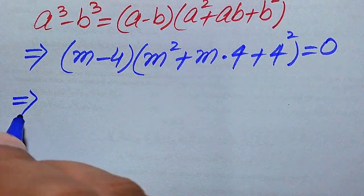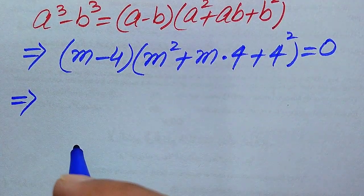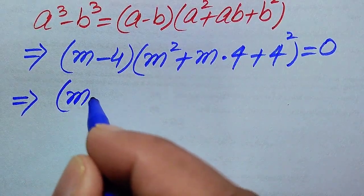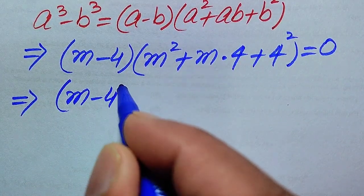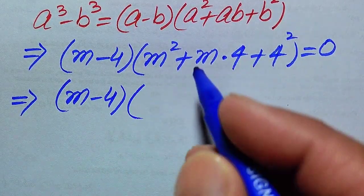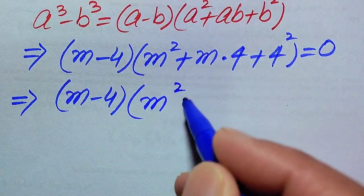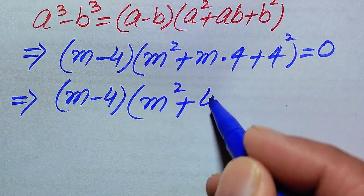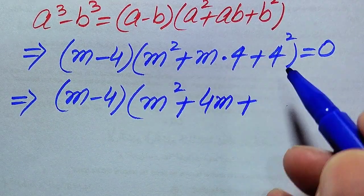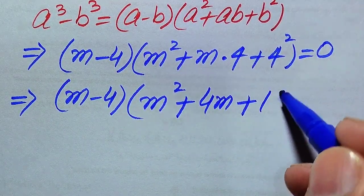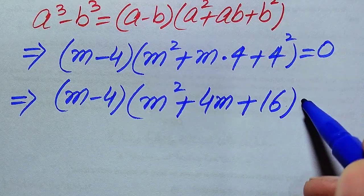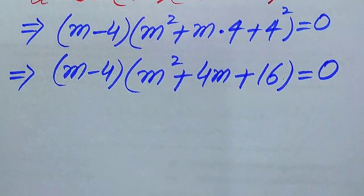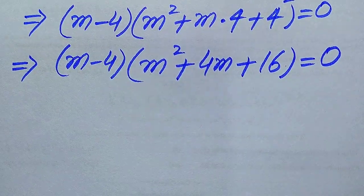After simplification, this is written as: (m minus 4) times (m squared plus 4m plus 16) equals 0, since 4 squared equals 16.